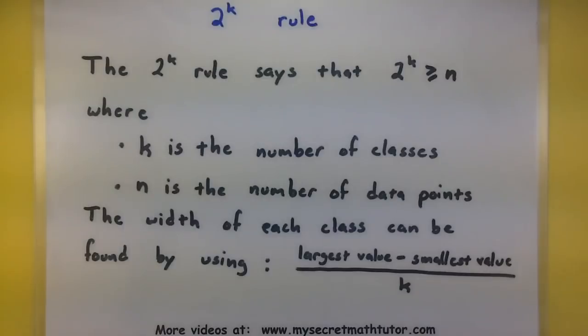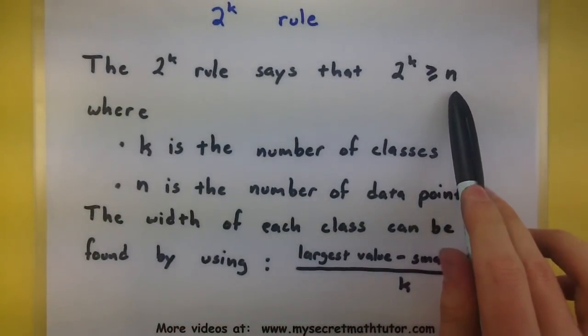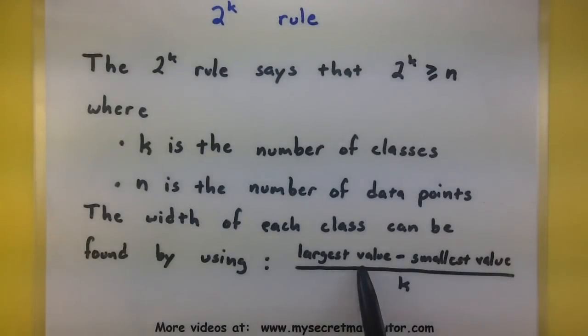So in practice, what we usually end up doing is we take our number of data points and put it in here and start searching for k so that we can get a number 2 to the k that is larger than the number of data points. Now, once we know how many classes we need to break this up into, then we can go further and actually figure out how wide to make each of these classes. The way we do that is we take our largest data value, subtract out the smallest data value, and divide by the number of classes.